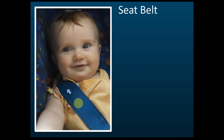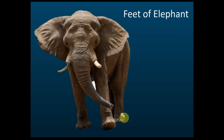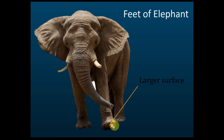Seat belt. You can also see that a seat belt is usually very wide. That is to increase the surface area and reduce the pressure — larger surface, lower pressure. Similarly, the feet of an elephant have a wide area, which is to reduce the pressure. Larger surface, lower pressure.